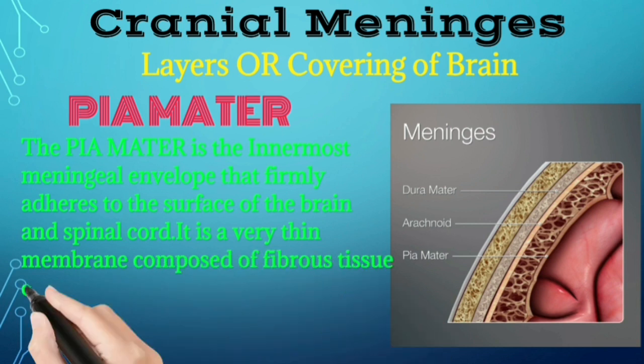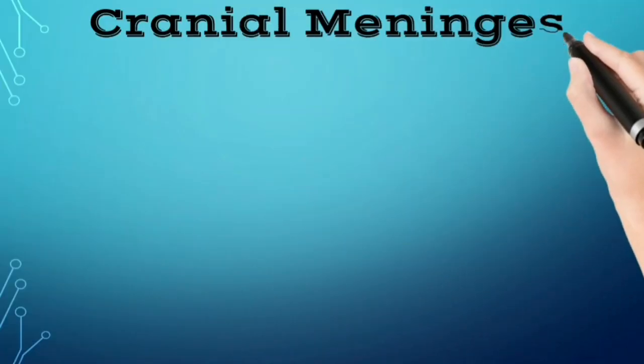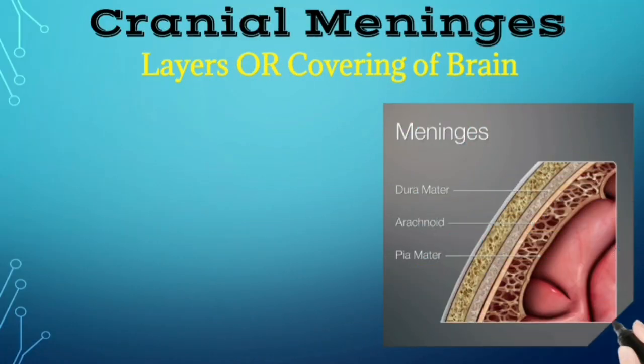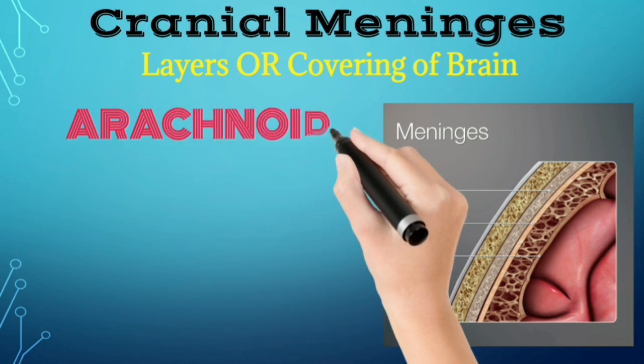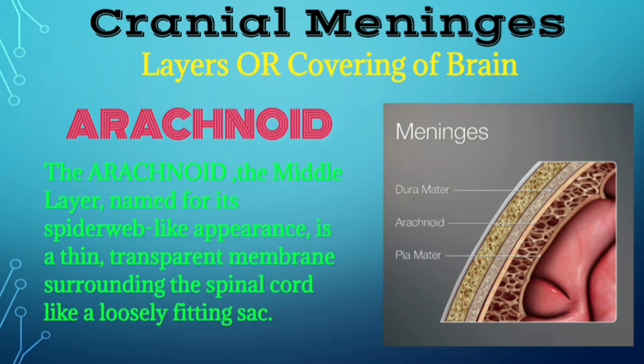Now let's look at pia mater. The pia mater is the meningeal envelope that firmly adheres to the surface of the brain and spinal cord. It is a very thin membrane composed of fibrous tissue covered on its outer surface by a sheet of flat cells thought to be impermeable to fluid. The arachnoid, named for its spider web-like appearance, is a thin transparent membrane surrounding the brain and spinal cord like a loosely fitting sac.